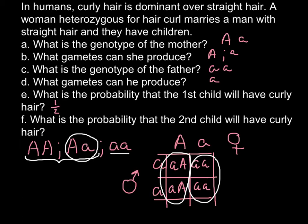Question F: What is the probability that the second child will have curly hair? The probability each time would be the same. No matter what the genotype of the first child is, it does not affect the probability for the second child. So the answer is also one half — 50% chance of curly hair and 50% chance of straight hair.